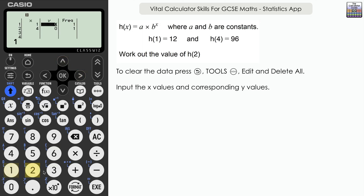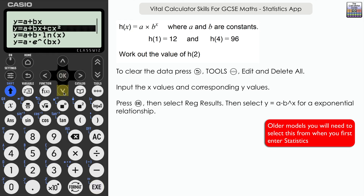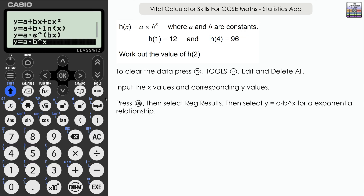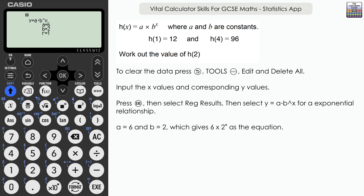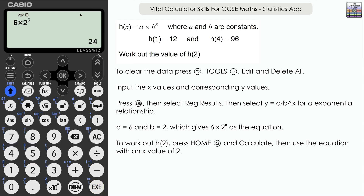Scroll down to find the exponential relationship: y = a · b^x, where the dot represents multiplication. Select it and press execute. We get a perfect exponential relationship with r = 1. a = 6 and b = 2. Now go to home, switch to calculate, and compute 6 × 2² — since x = 2. The final answer is 24, which is the value of h(2).